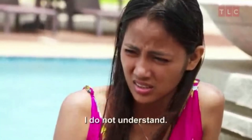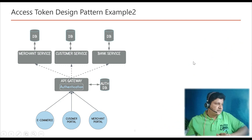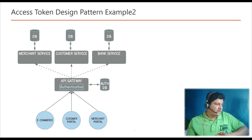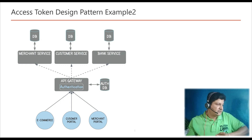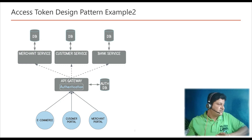Let's understand the access token design pattern with another example. In this example we have different clients like e-commerce customer portals or merchant portals, all wanting to access microservices such as merchant service, customer service, bank service, and so on. Access to these services is through an API gateway, which is the only channel to these services. All the services are running inside a virtual private network, and the API gateway has defined all the endpoints to access these services.